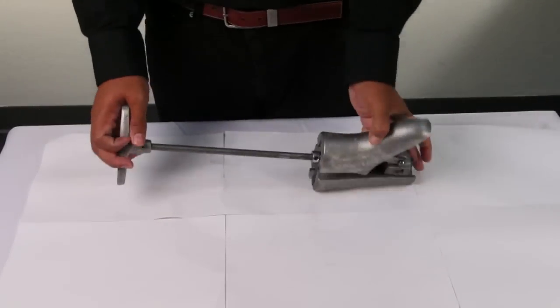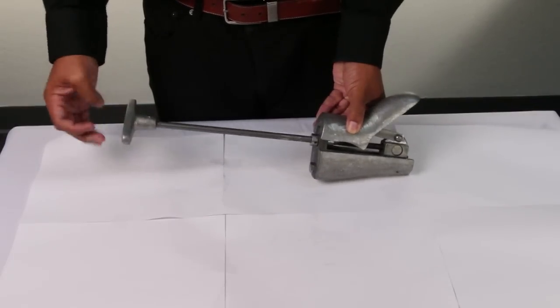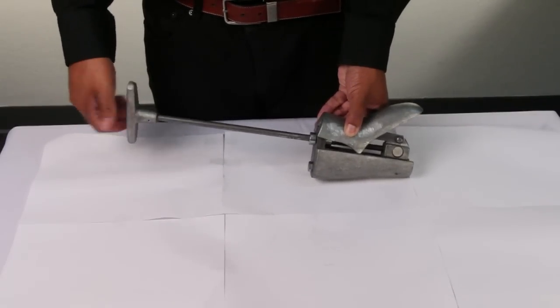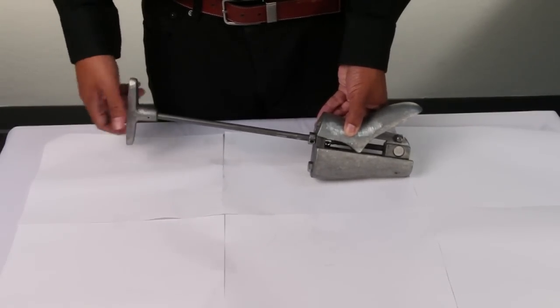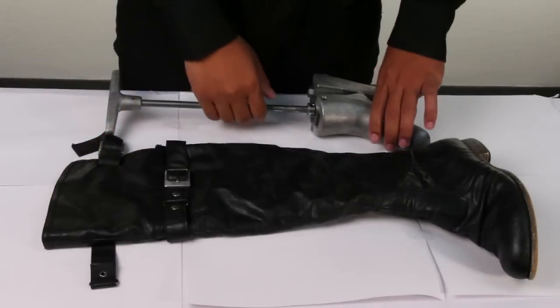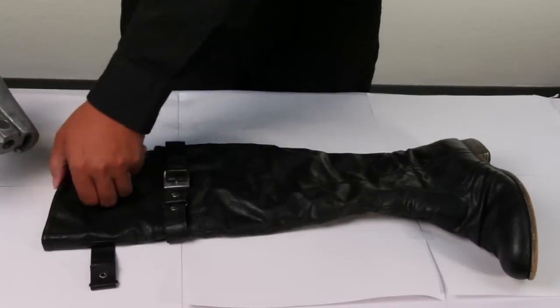Now let's make sure the boot stretcher is at its minimum stretch length. Simply turn it counter clockwise to reduce the length. Place the boot stretcher in your boot and position correctly to the precise area you need to stretch.